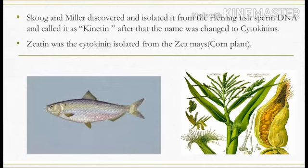The name was changed to cytokinin because kinetin performs the function of cell division. Then, from the plant Zea mays, which is commonly known as the corn plant, they isolated the cytokinin known as zeatin. So zeatin was the cytokinin isolated from the plant Zea mays.